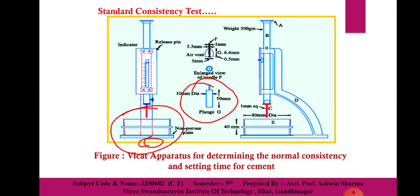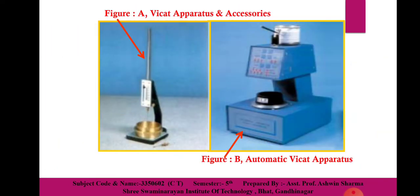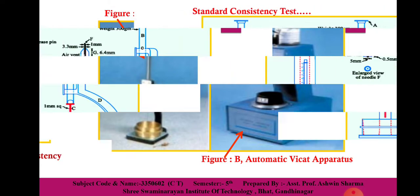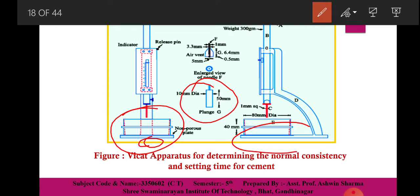The real image shown is an automatic Vicat apparatus which works automatically. The second image is also called the automatic version. The plunger shown is made of glass with a scale, and the weight attached is 300 grams.